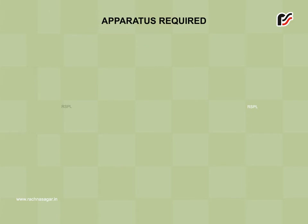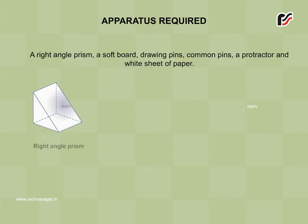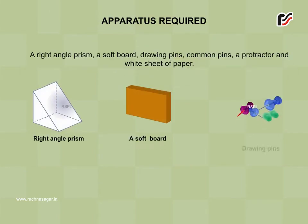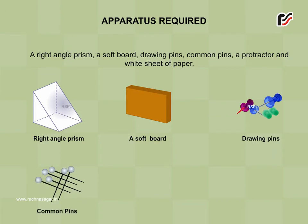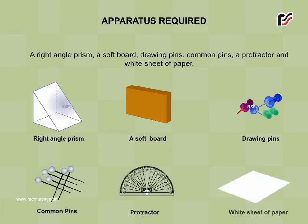Apparatus required: A right-angle prism, a soft board, drawing pins, common pins, a protractor and white sheet of paper.